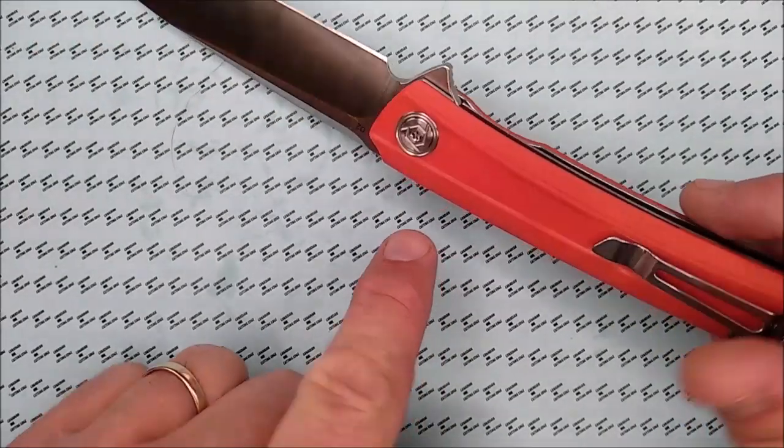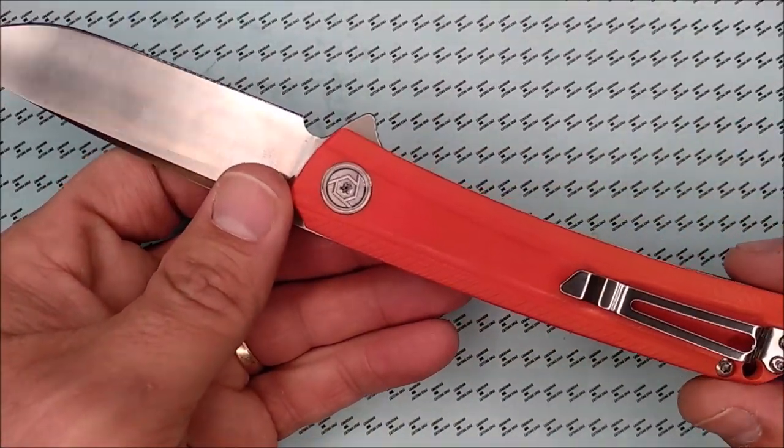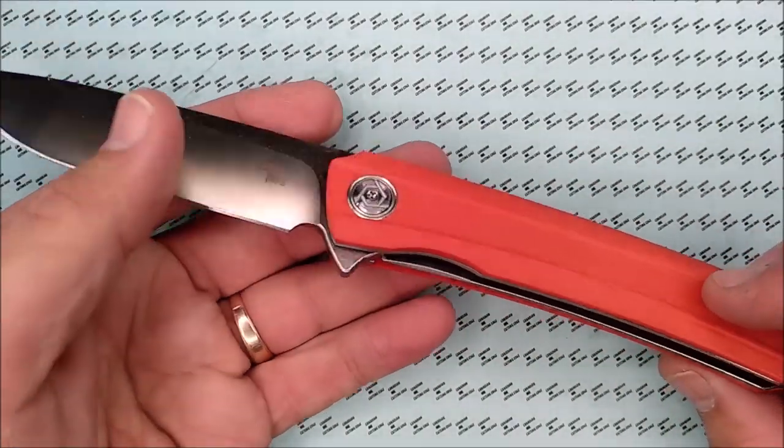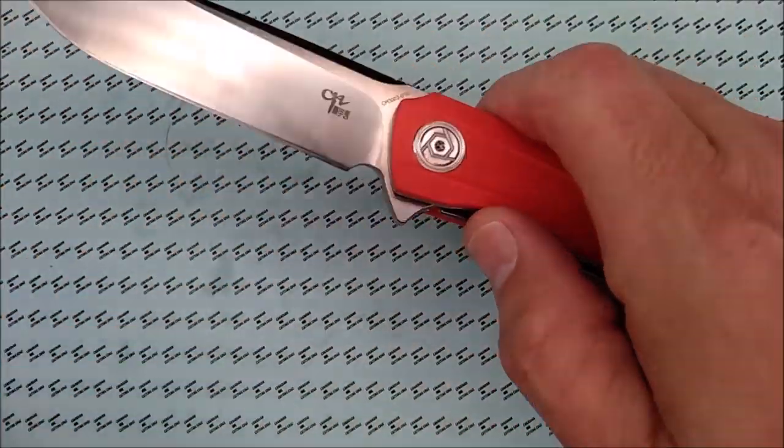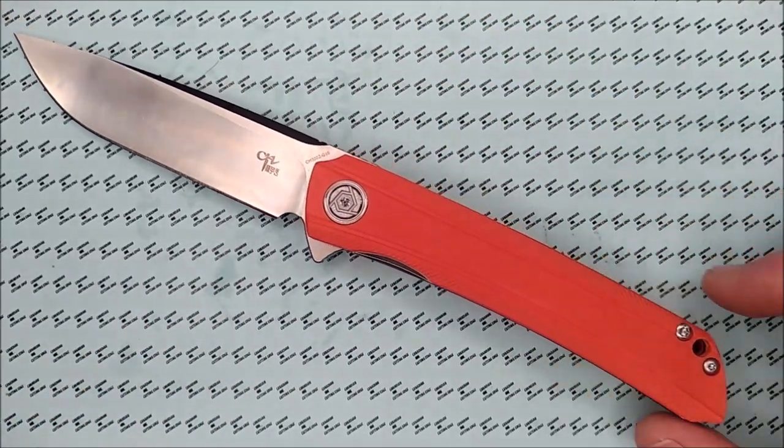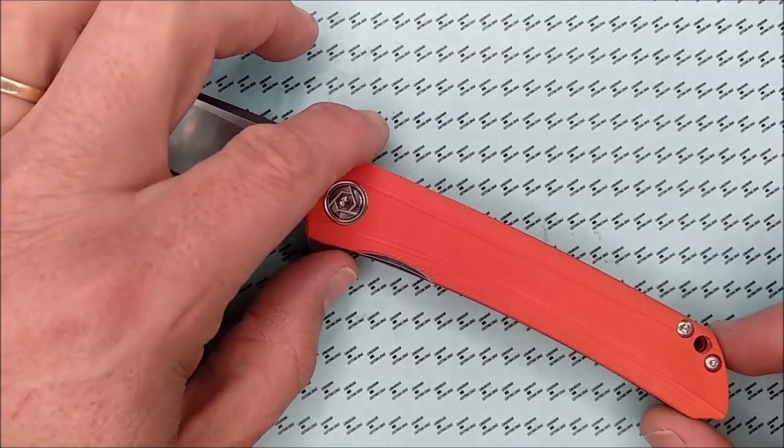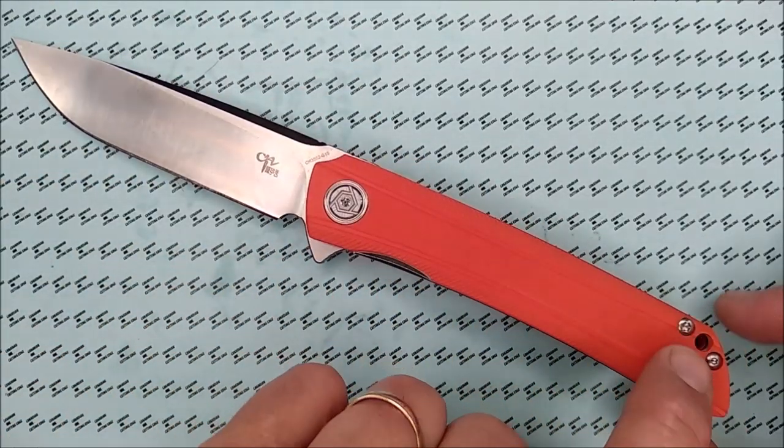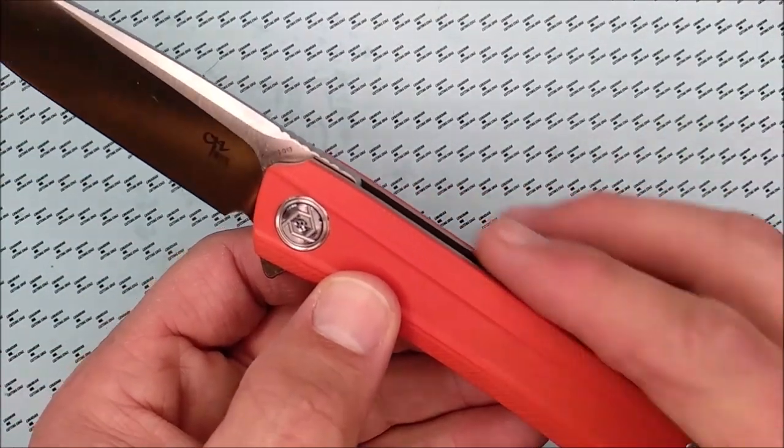On this side you can see there's no real finger choil here for the index finger. There's a little bit of a cut out here, but that's for your thumb for when you want to go to unlock the knife. So it's basically a stick, very little bit of a swell at the back, hardly anything at all.